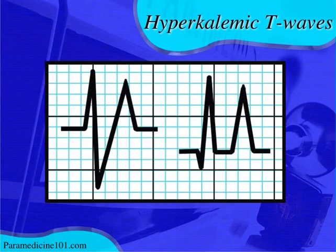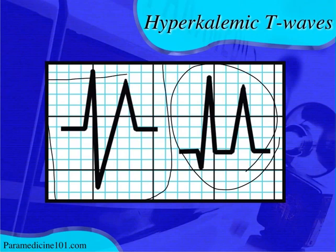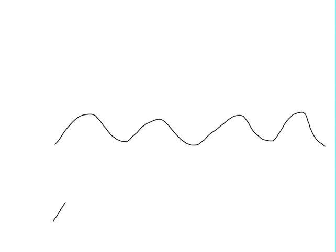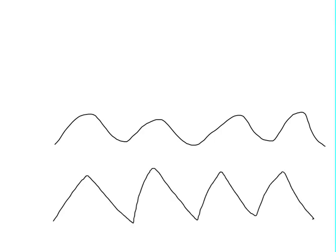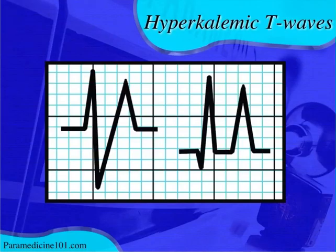Here's an image showing the difference between a hyperkalemic T wave — a tall, narrow, symmetrical T wave — versus the more severe presentation on the left which is more of a sine wave pattern. A sine wave, if you remember trigonometry, is a repeating wave pattern, and that's often what you get with severe hyperkalemia. It looks a lot like a ventricular rhythm or ventricular tachycardia.